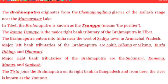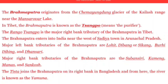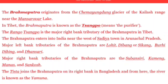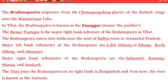The left bank tributaries of the Brahmaputra include Lohit, Dibang, Subansiri, Dihing, Dhansiri, and Buri. The major right bank tributaries are Subansiri, Manas, Dhansari, and Sankosh.